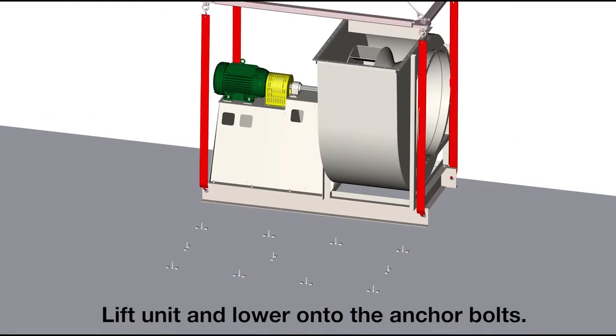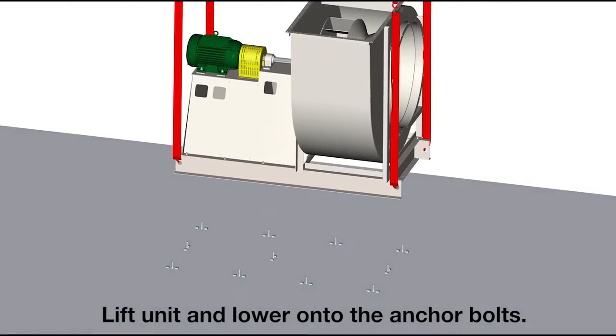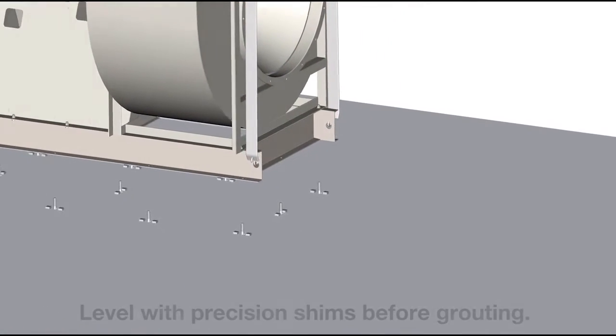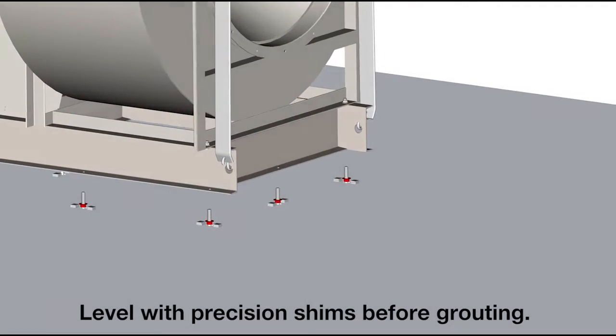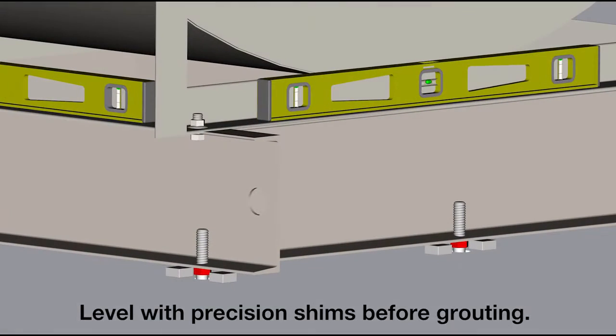Lift the unit and lower it onto the anchor bolts. Make sure to level before grouting. If using leveling nuts, the leveling nuts must be backed off after placing the shims.